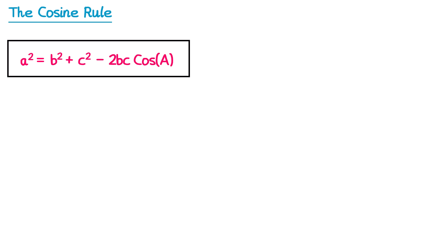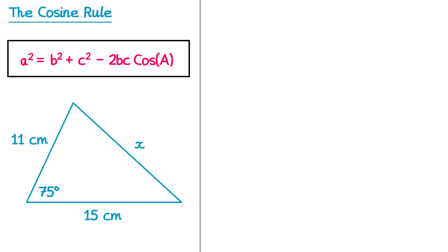So let's have a look at how you can use the cosine rule to help us find missing information in this triangle here. If we're going to use the cosine rule to try and find a missing side, we're going to want to label that side as a, so we're going to label the x here as a. Then the angle that's opposite this a must be capital A. The only other bits of information we're given are the other two sides, so they're going to be our lowercase b and c.